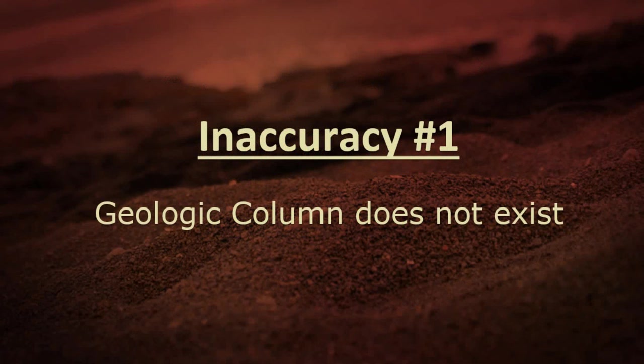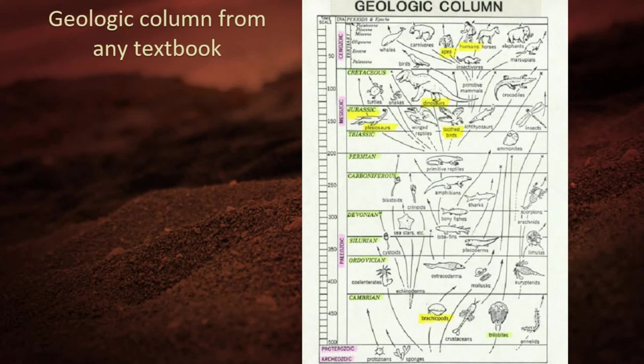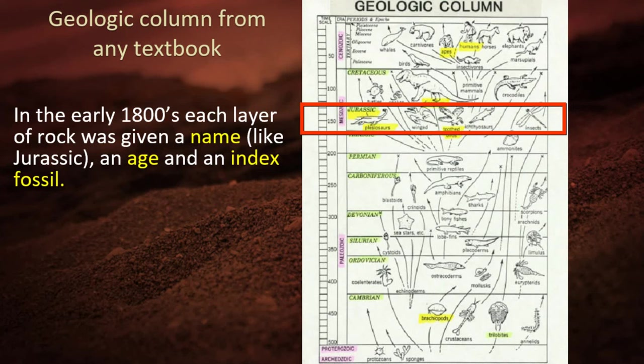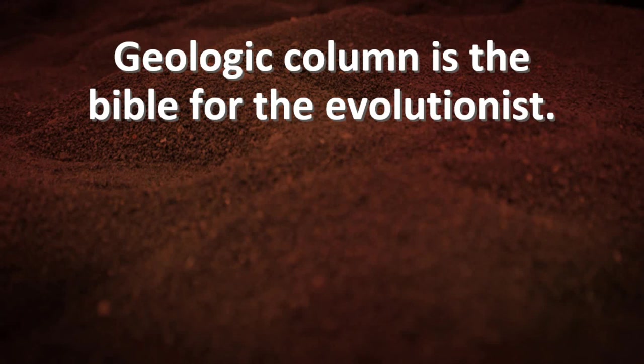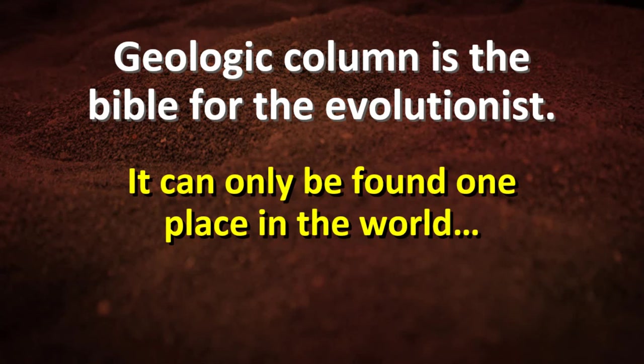Inaccuracy number one: secular scientists say the geological column gives millions of years to prove evolution — but it's inaccurate because it doesn't exist. In every high school or college textbook they describe a geological column where, in the early 1800s, each rock layer was given a name like Jurassic, an age, and an index fossil. Fossils are dated by their position in the geologic column since 1830. But that column does not exist anywhere in the world except in textbooks. The geological column is the Bible for evolutionists — it can only be found in their textbooks.